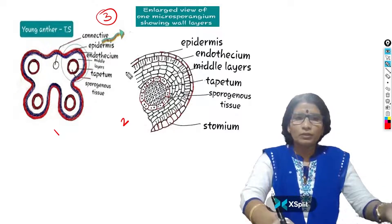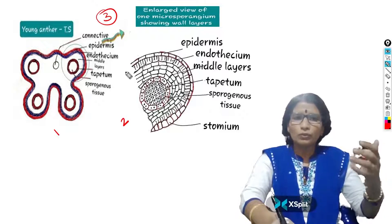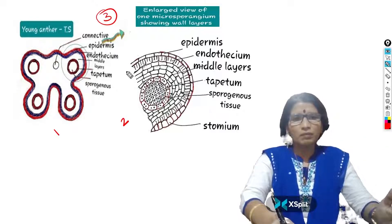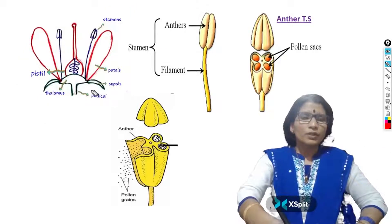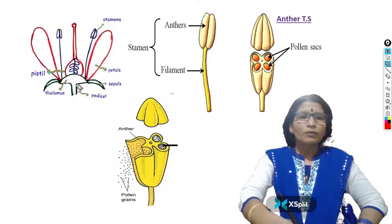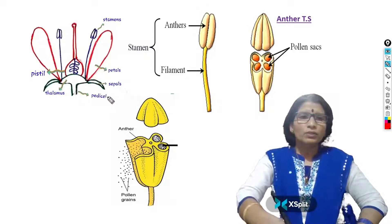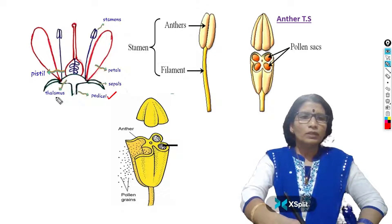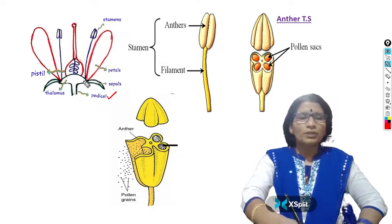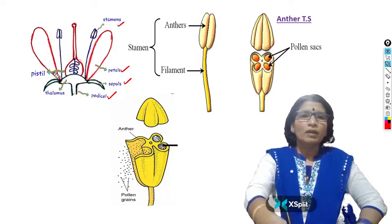While explaining, I will take so many diagrams — no need to draw all the diagrams in the examination. This is the general angiospermic flower structure. In this flower, you can see a small stock-like structure called the pedicel, and the broad structure at the top of the pedicel is called the thalamus. Usually on the thalamus, floral parts are arranged: sepals, petals, stamens, and pistil.